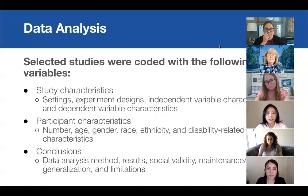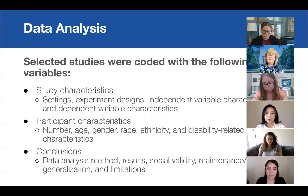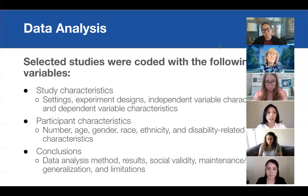The selected studies were coded with the following variables: study characteristics including settings, experimental designs, and independent and dependent variable characteristics; participant characteristics including total number, age, gender, race, ethnicity, and disability-related characteristics; and conclusions including data analysis method, results, social validity, maintenance, generalization, and limitations.